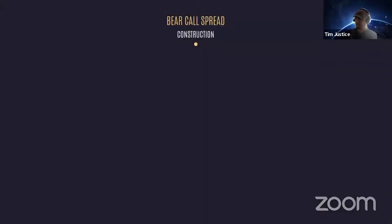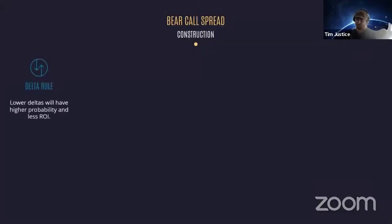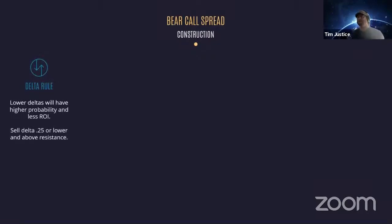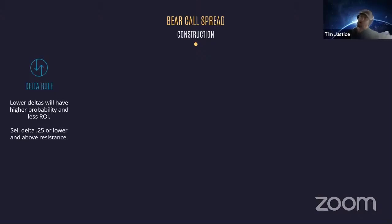Here's how you build the bear call spread. Number one, you have a delta rule. We want low deltas because a low delta indicates a high probability of success. The core rule is that it has to be less than a 25 delta on the short call that you sell.